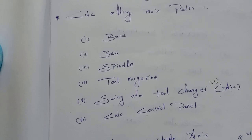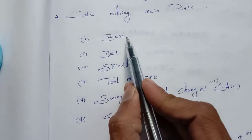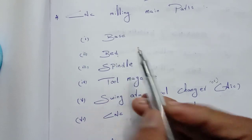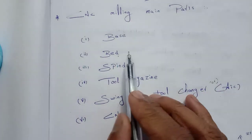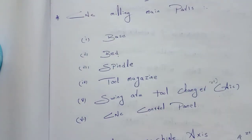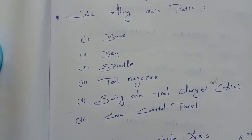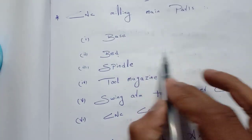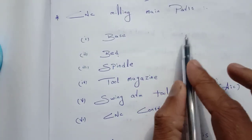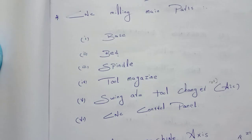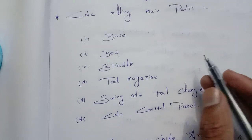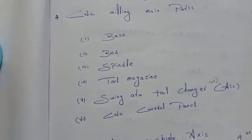First, base. Base means basic. Bed. T-slot. T-slot means fixer. T-slot — a more place. Let's place a T-slot.